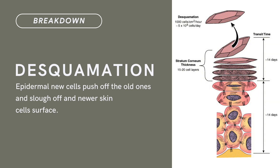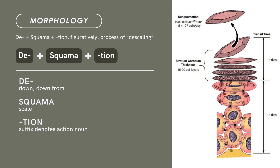Compound term: desquamation. Brief definition: epidermal new cells push off the old ones and slough off at the newer skin cell surface. Term morphology: compound of de- plus squama plus -tion. Figuratively means 'process of descaling.' De- means down or down from. Squama means scale. -Tion is a suffix that denotes action noun. There you have it — compound term: desquamation.